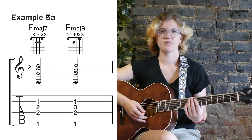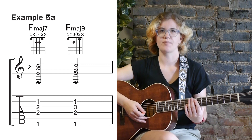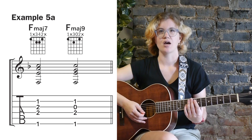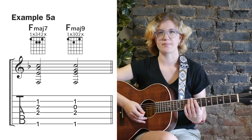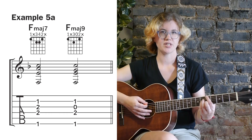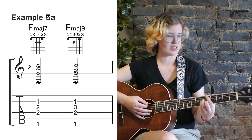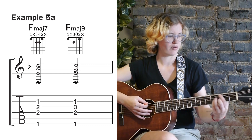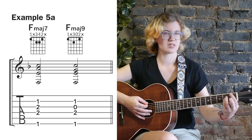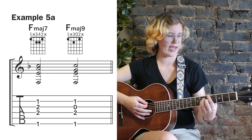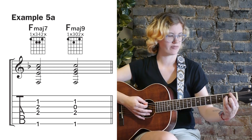Note that the voicings in example 5a are movable shapes. What we did is simply take the voicing from example 3b and move it down four frets from A to F.